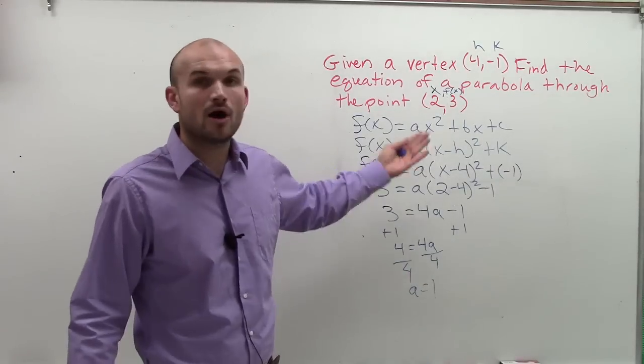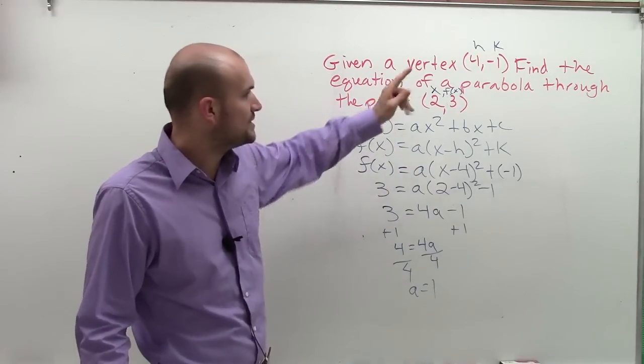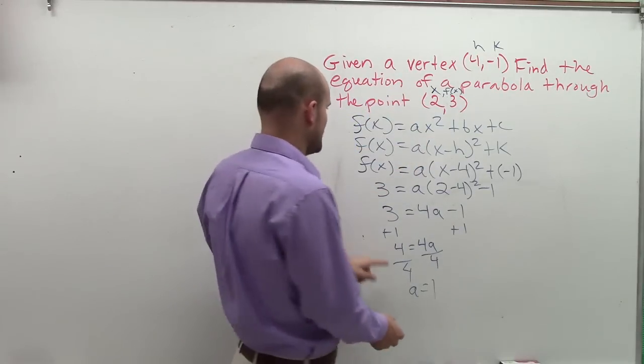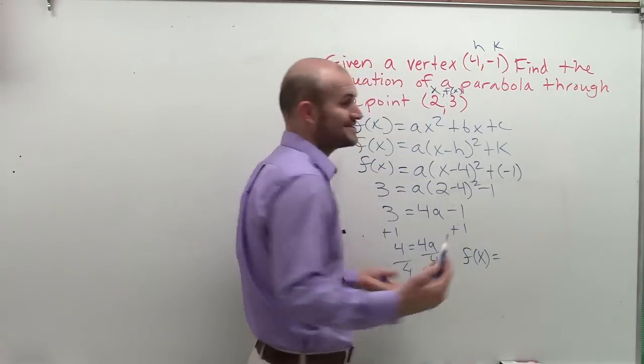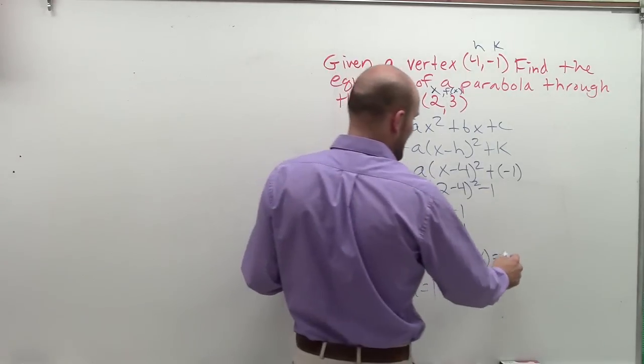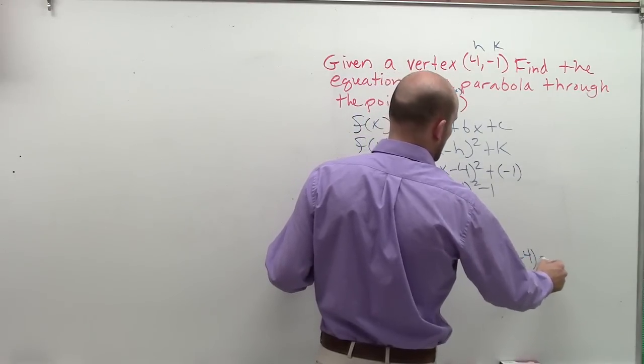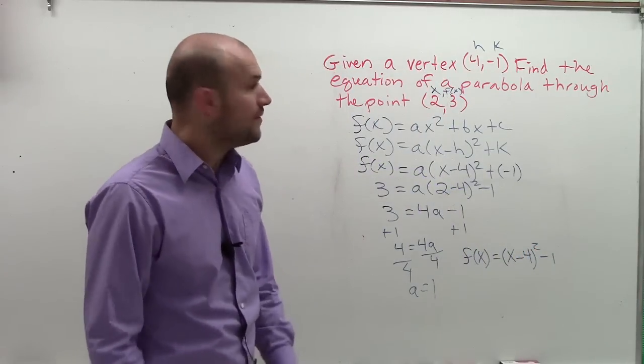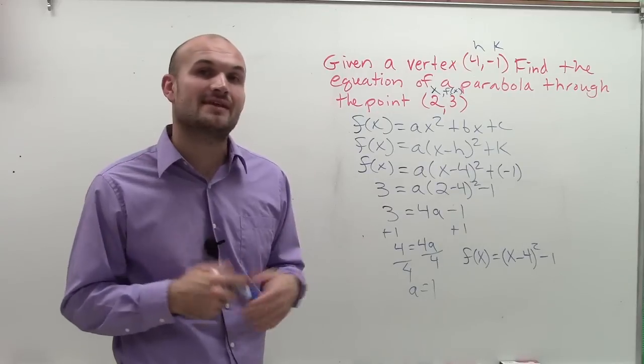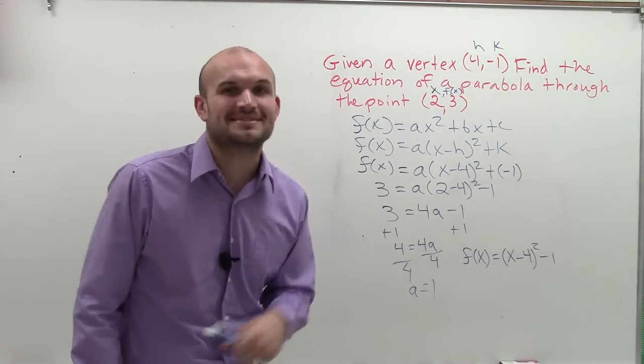We're just going to plug it all into my equation now, into this equation, because we know the vertex. So my a is 1, so I have f of x equals 1. We actually don't even need to write it. Then we just have f of x equals x minus 4 squared minus 1. So there you go, ladies and gentlemen. That's how you write an equation when given a point and a vertex.